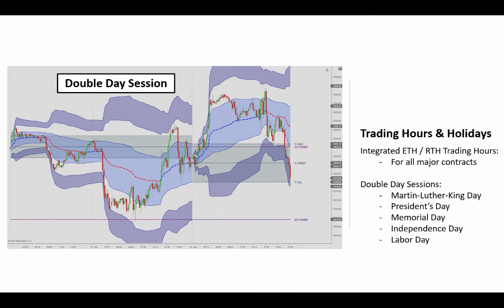The premium session VWAP version also comes with integrated trading hours and a holiday calendar. Abbreviated sessions are bundled together as one session, so that will give you the correct prior VWAP and value reading for the following day. This is a double-day session — two sessions bundled into one — and then the VWAP is calculated for both of those sessions. That covers basically all the US public holidays. We also have integrated the trading hours for all the major futures contracts here, so all you have to do is put this on your charts and it will show you the correct VWAP regardless of whether you have a full session, regular session, or a CME holiday for the previous session.